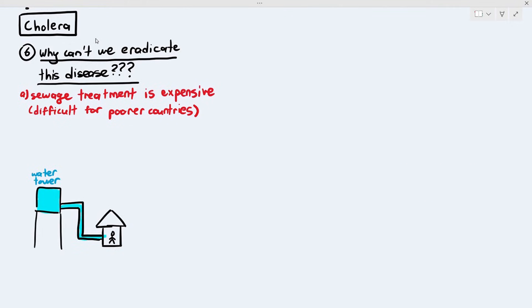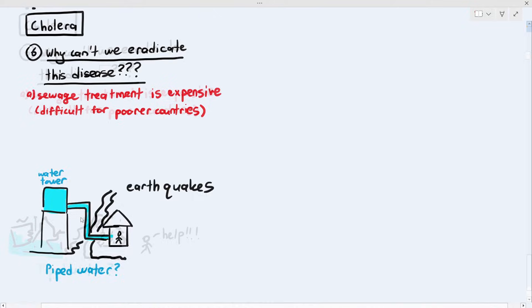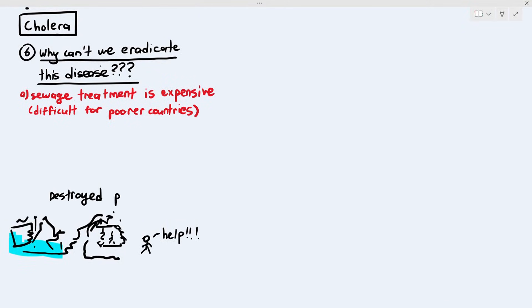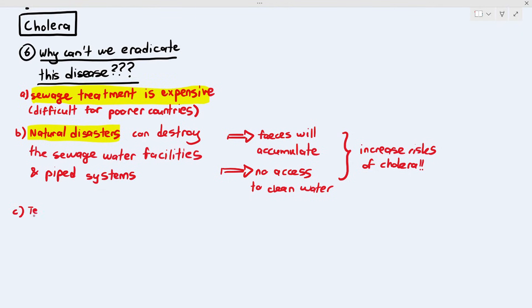Now, another problem is, imagine a situation where a person has a water tower and piped water going into their houses. Natural disasters such as earthquakes or even a tornado can destroy the piping systems. And when it destroys the piping systems and sewage treatment facilities, the feces in the area will accumulate and the person around that natural disaster will not have any access to clean water. So, in that case, they may have to rely on water from the river and the lake. And because the sewage treatment is no longer working, people are digesting their feces into rivers and lakes again. So, it causes an increased risk of cholera.